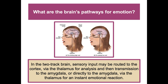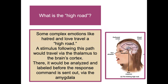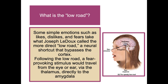Sensory input can also go directly to the amygdala via the thalamus for an instant, snap emotional reaction. Some complex emotions like hatred and love travel a 'high road' — through the thalamus to the cortex, where they are analyzed and labeled before a response is sent via the amygdala. On the other hand, some simple emotions such as likes, dislikes, and fears take what Joseph LeDoux called the 'low road' — a neural shortcut bypassing the cortex, going from the eye or ear via the thalamus directly to the amygdala.